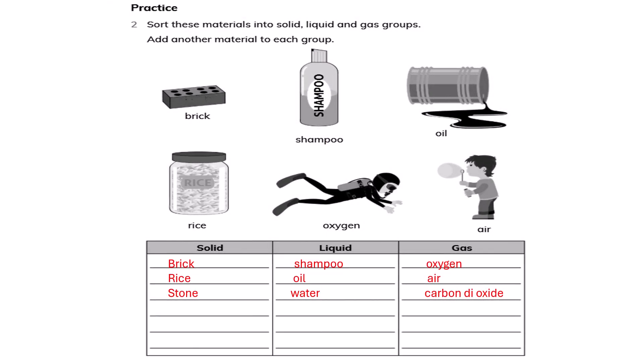Sort these things into solid, liquid, and gas groups. Also add another material to each group. There are 6 objects: brick, shampoo, oil, rice, oxygen, and air. Solids are brick, rice, and stone. These are solids.